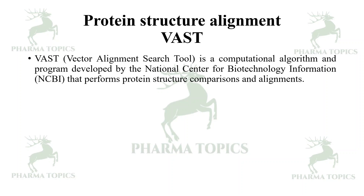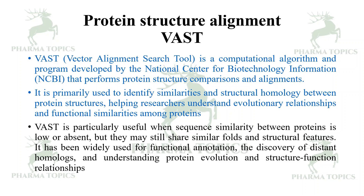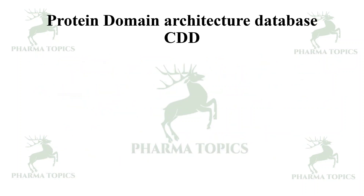Next is VAST — Vector Alignment Search Tool. It is a computational algorithm developed by NCBI that performs protein structure comparisons and alignments. It is primarily used to identify structural similarities and homology between protein structures, and to identify evolutionary relationships and functional similarities among proteins. VAST is particularly useful when sequence similarity between proteins is low or absent. It is widely used for functional annotation, discovery of distant homologues, and understanding protein evolution.